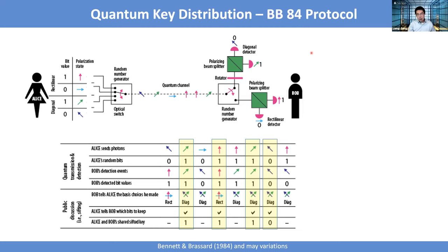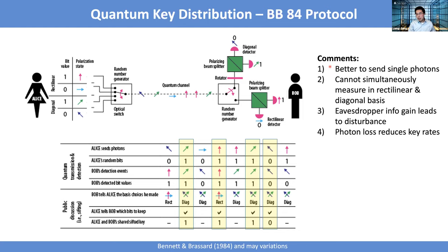This protocol was invented by Charlie Bennett and Brassard in 1984, which is why it's called the BB84 protocol. It has been around a while. This is one of the first protocols where people took the quantum information perspective to say there's something interesting and unique about quantum for communication.